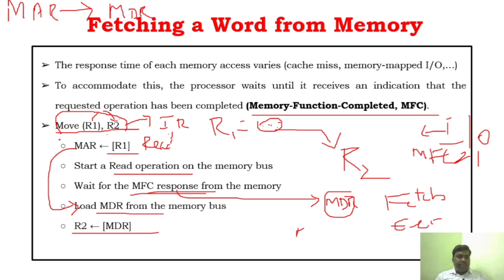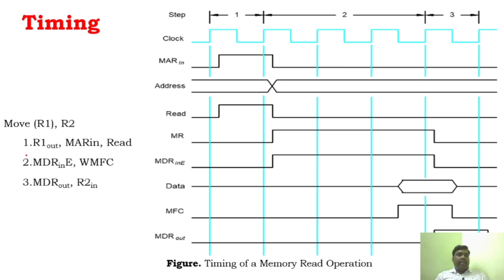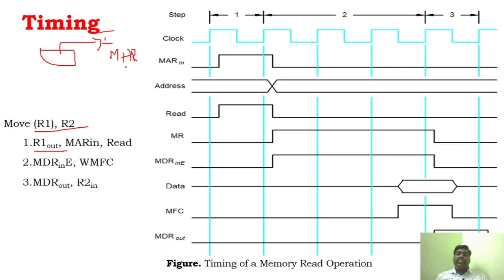Now I will explain the same flow as a program. For the instruction 'Move content of R1 to R2': R1 out is set - meaning the content of R1 is sent to the internal bus. From the internal bus it is sent to the MAR, because it has to fetch that information. So it loads the MAR and initiates the read cycle. The processor will then wait until the MFC signal is completed.